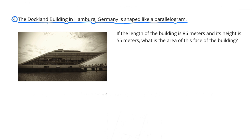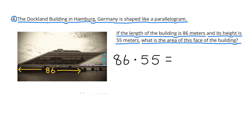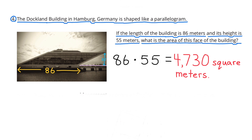Number 4. The Dockland Building in Hamburg, Germany, is shaped like a parallelogram. If the length of the building is 86 meters and its height is 55 meters, what is the area of this face of the building? 86 meters represents the length in yellow, and 55 meters represents the height in blue. 86 meters times 55 meters equals 4,730 square meters. The area of the face of the building is 4,730 square meters.